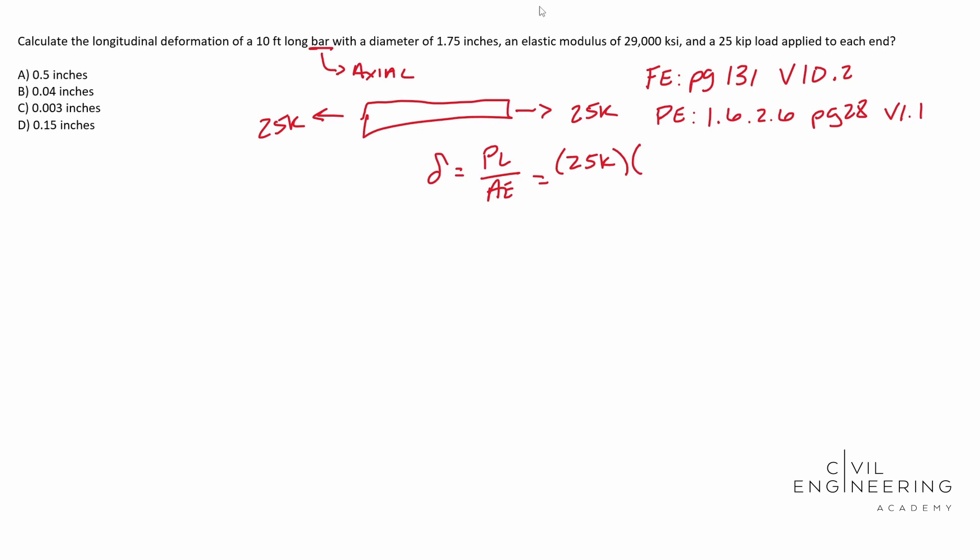So then we divide that by our cross-sectional area, pi D squared over 4. The pi times D, which is 1.75 inches. Notice that all of our units are working out in our favor. So we need to square that guy.